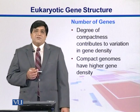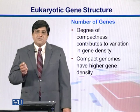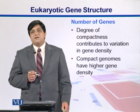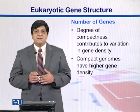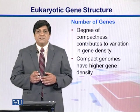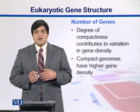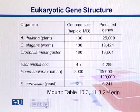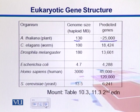Now we talk about the degree of compactness. In compact genomes — genomes in which the size is small — the relative proportion of genes is higher, which contributes to gene density. So compact genomes have more gene density. Looking at this table, we have different genomes, mostly eukaryotes. The genome size in Arabidopsis is 130 MB and the number of genes is approximately 25,000.